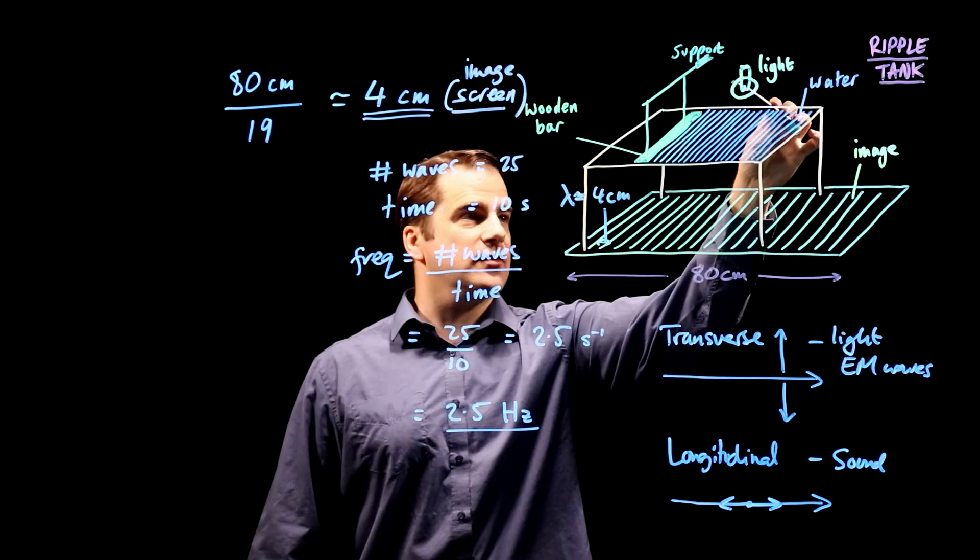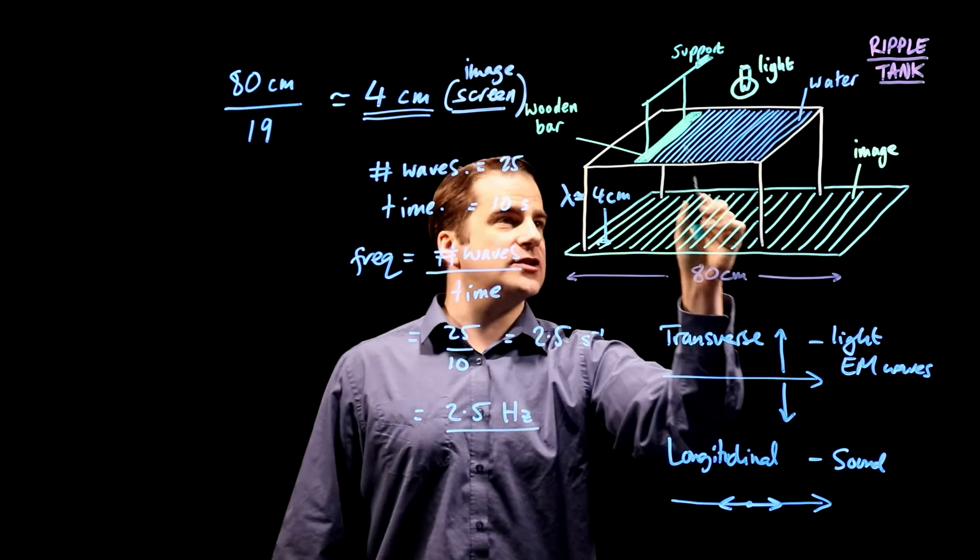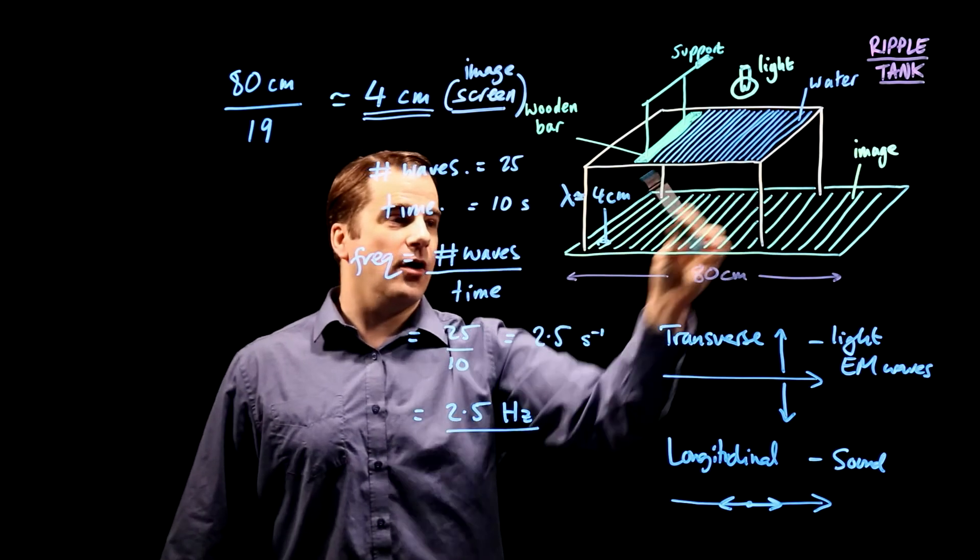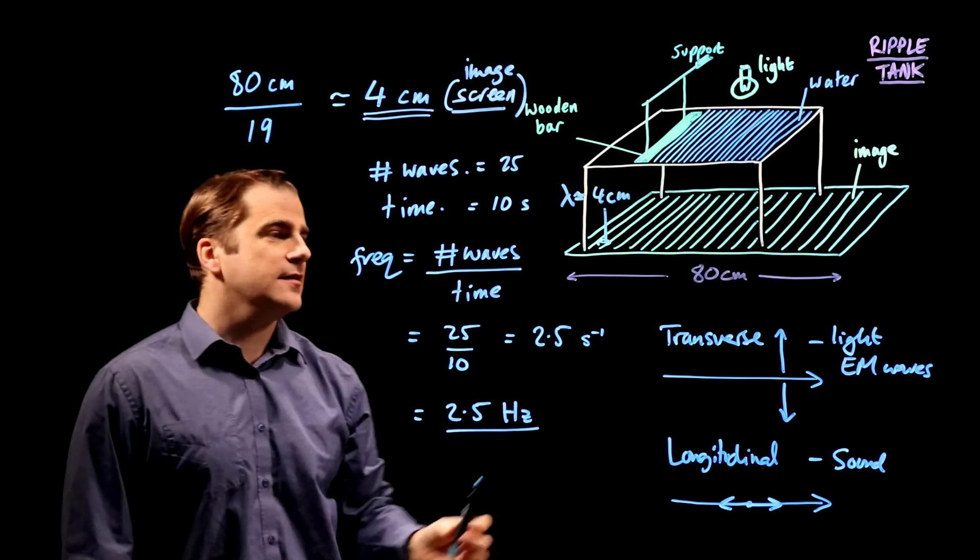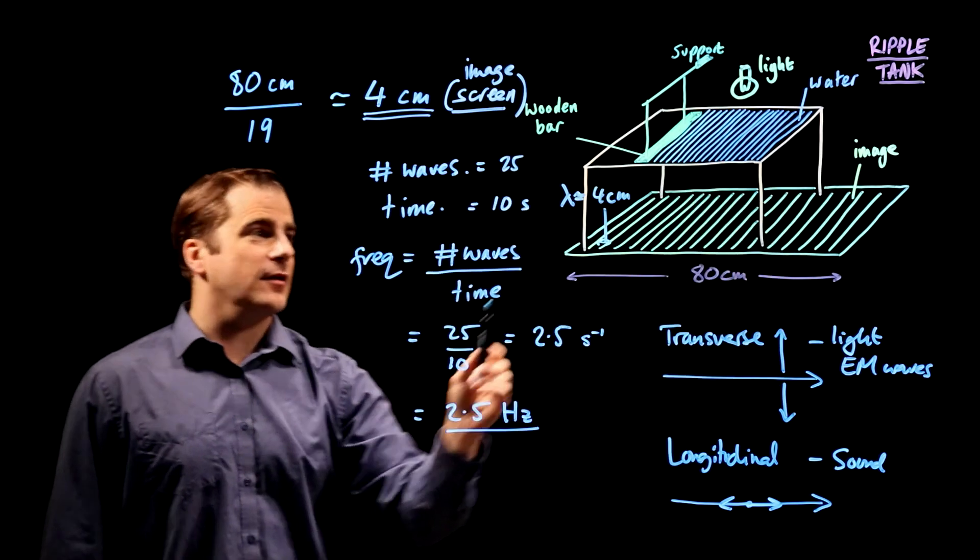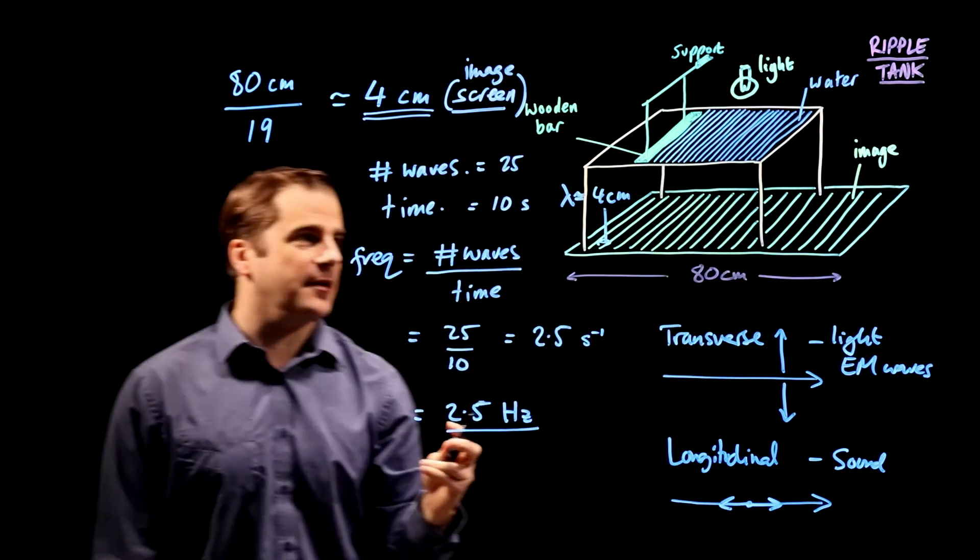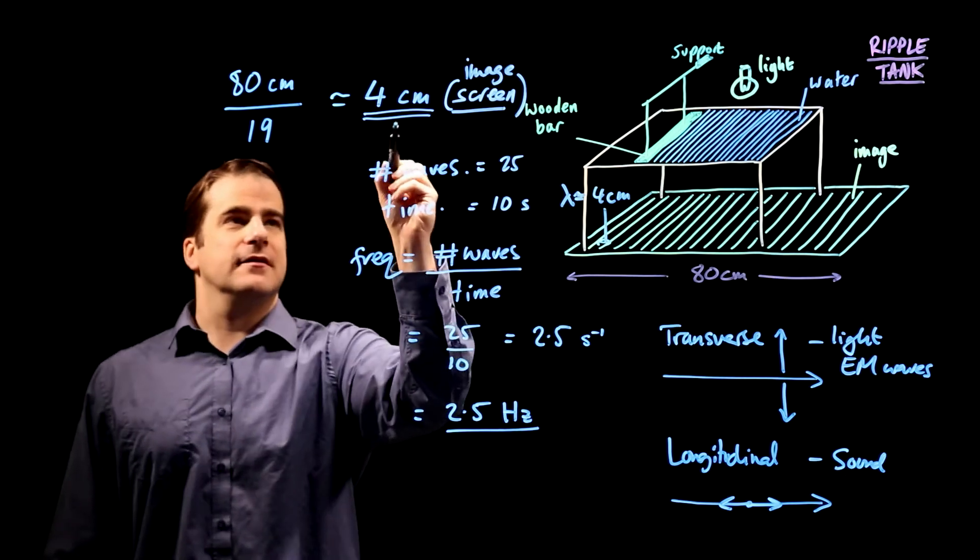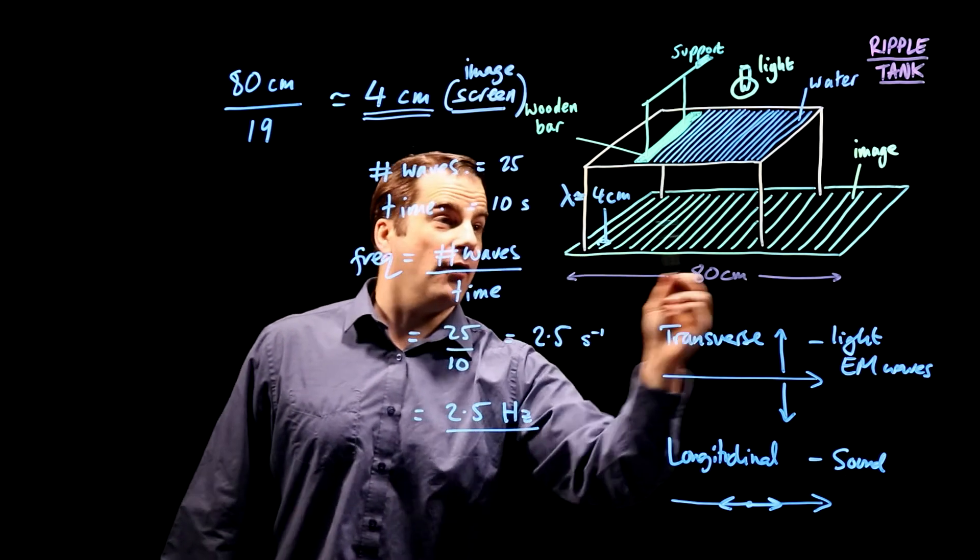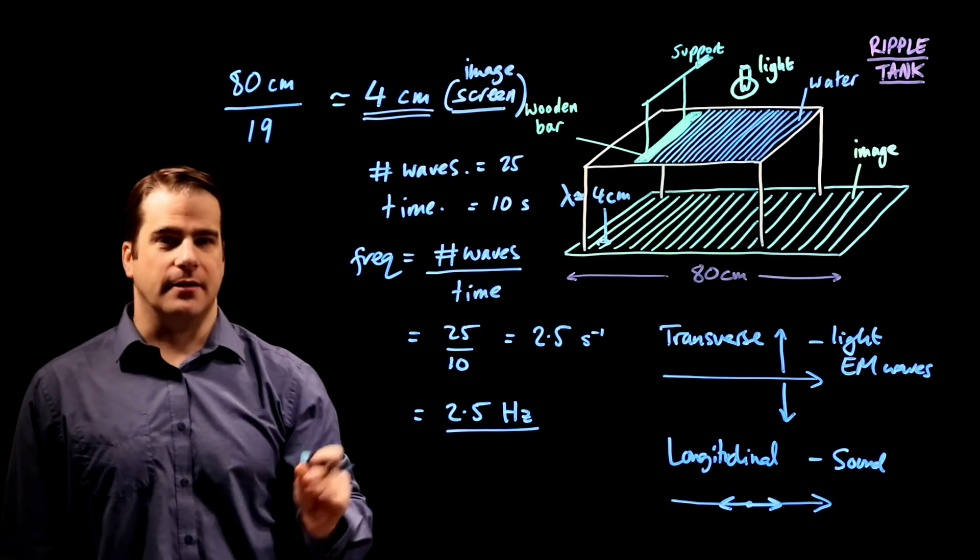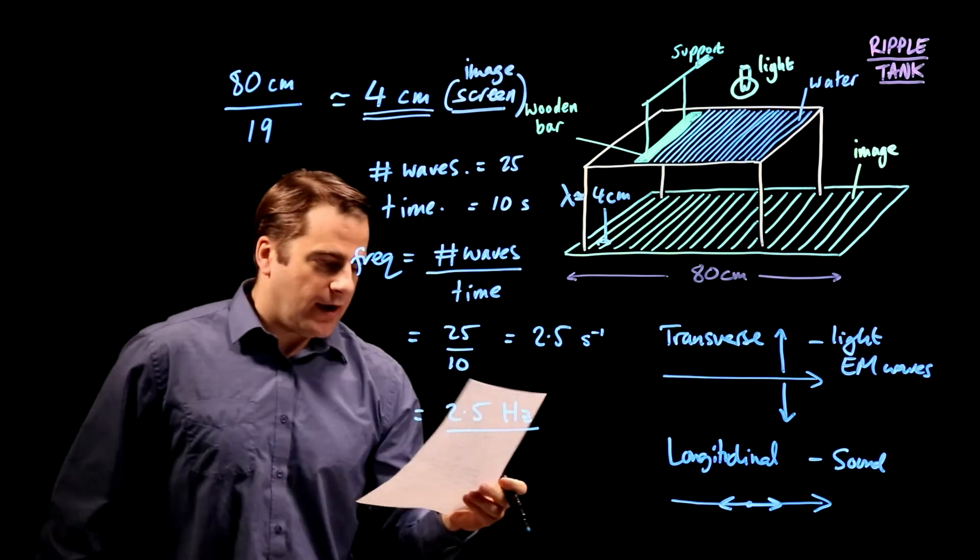Because you've got a light source here, it's projecting an image of the actual ripple tank onto the floor. And the image is bigger than the thing itself. So the real wavelength will be less, maybe about one or two centimetres. So that's the wavelength on the screen. Right, let's move on.